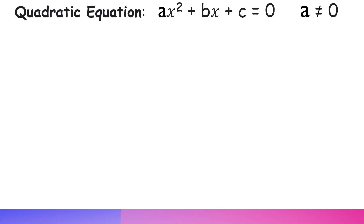We are looking at the general form of a quadratic equation, which is ax squared plus bx plus c equals zero, provided a is not equal to zero. If a is zero, the first term is knocked off and we have bx plus c equals zero, which is a linear equation. So the condition for a quadratic equation is that a must not equal zero.